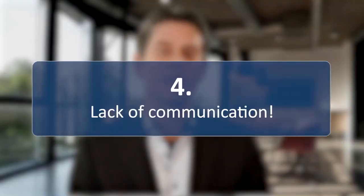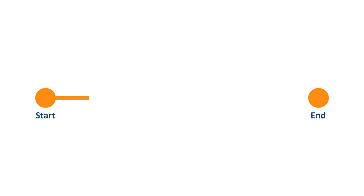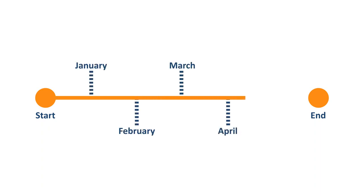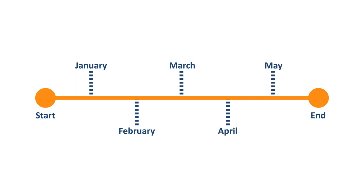The fourth point: lack of communication. A change process is usually a lengthy period. During the entire process, it's important to stay in constant contact with the employees concerned, and to communicate continuously and regularly with them. For one thing, your employees feel involved and as a part of the process. On the other hand, it signals to the team that the issue still has top priority and is not fizzling out.